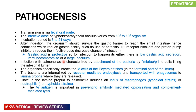Infection with Salmonella is characterized by attachment of the bacteria, via fimbriae or pili, to the cells of the intestinal lumen. They specifically infect the M cells and macrophages of the Peyer's patches, which are very prominent in the terminal part of the ileum. Once the bacteria are internalized by receptor-mediated endocytosis, they are transported in the phagosome. Their capsule prevents phagocytosis, and the capsular antigen also prevents antibody-mediated opsonization and complement-mediated lysis.